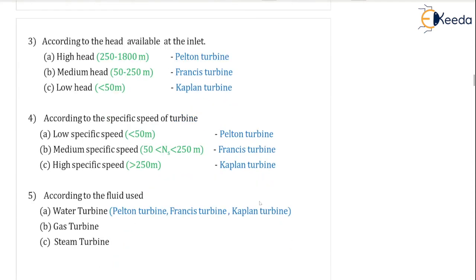The third classification is according to the head available at the inlet. High head turbines operate at 250 to 1800 meters — the example is the Pelton turbine. Medium head is 50 to 250 meters — the example is the Francis turbine. Low head is less than 50 meters — the example is the Kaplan turbine. The Kaplan turbine is a low head axial flow turbine, the Francis turbine is a reaction turbine, and the Pelton turbine is an impulse turbine.